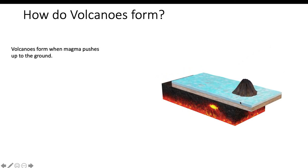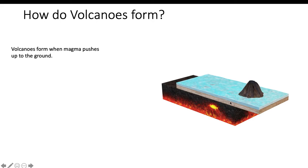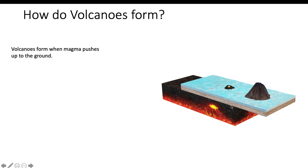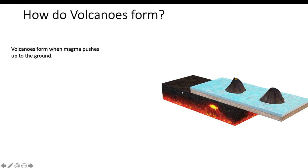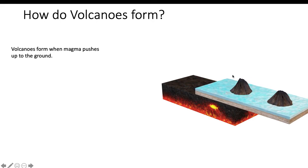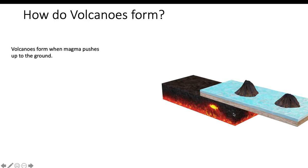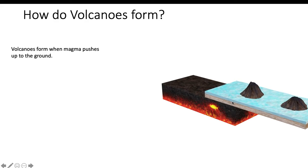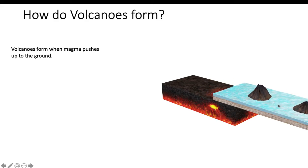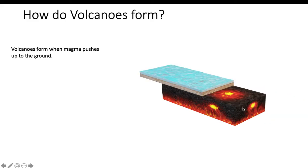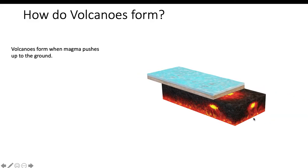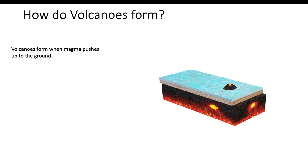If you notice, the volcano is only forming at this one spot — it doesn't form here or there because the magma is only here. It goes up each time the plate moves over this location. That's how a volcano can form from a hot spot.